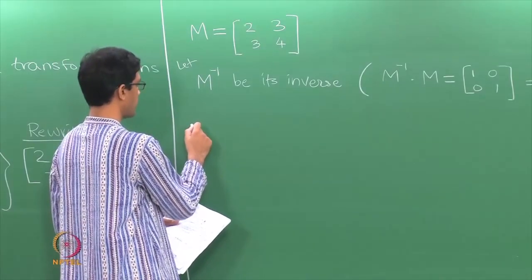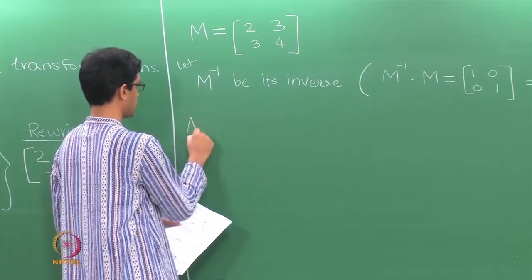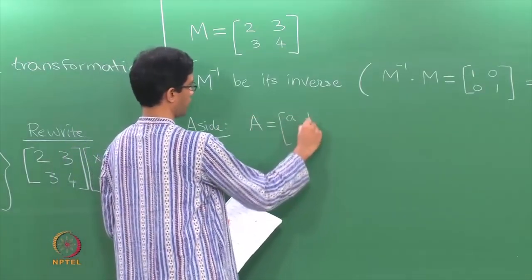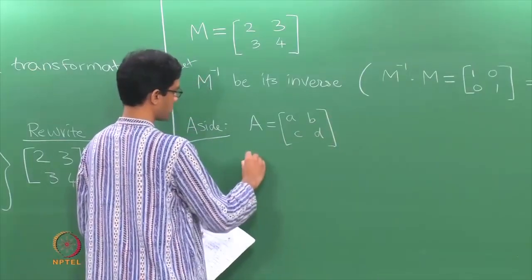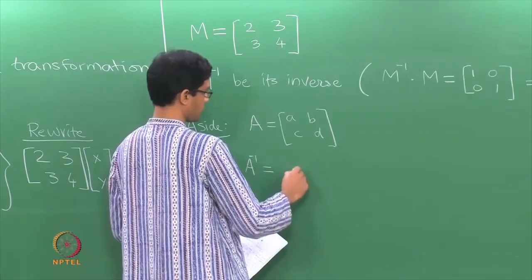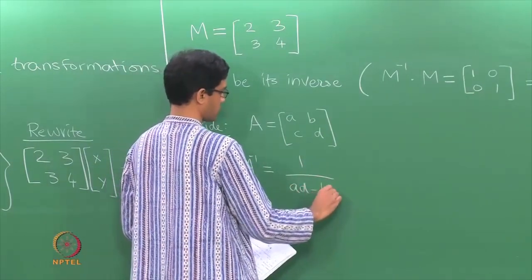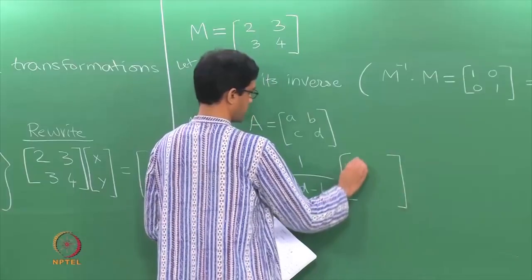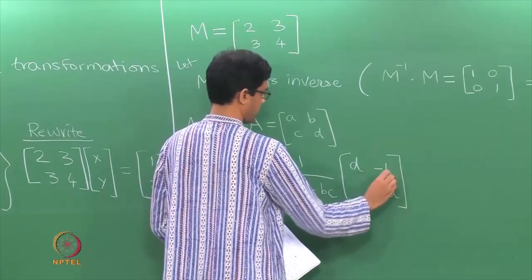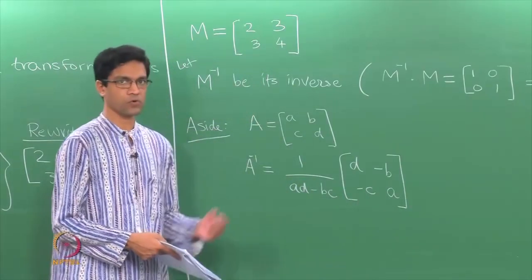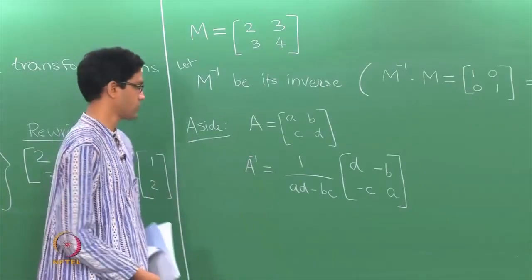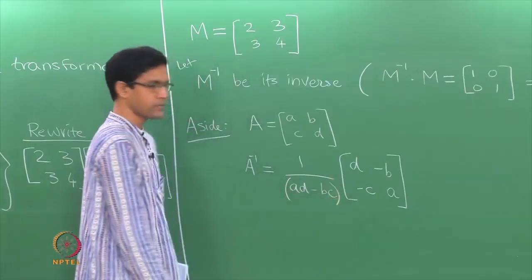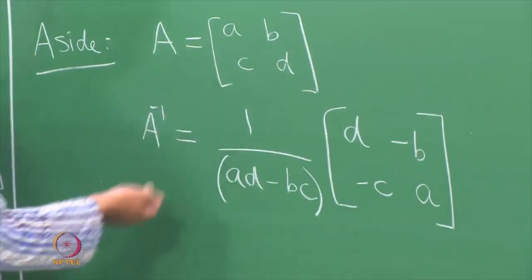What is the general formula for a 2×2 matrix inverse? Given a 2×2 matrix with entries A, B, C, D, the inverse has the following description: it is 1 divided by the determinant of the matrix — which is AD minus BC — times the matrix with entries D, −B, −C, A. This prescription works for 2×2 matrices. The inverse only exists provided the determinant is not zero; you cannot invert matrices whose determinant is zero.